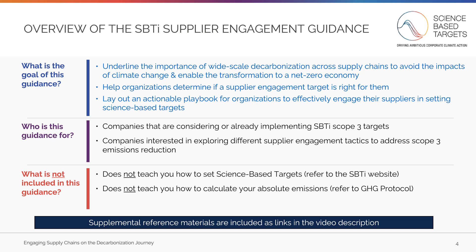This guidance has three primary goals and covers the following topic areas: underlining the importance of wide-scale decarbonization across supply chains to avoid the impacts of climate change and enable the transformation to a net-zero economy; helping organizations determine if a supplier engagement target is right for them; and laying out an actionable playbook for organizations to effectively engage their suppliers in setting science-based targets.